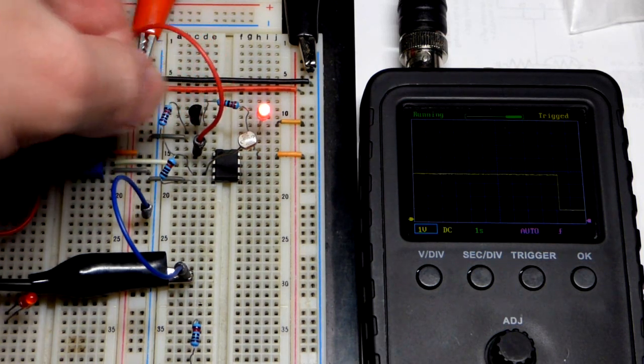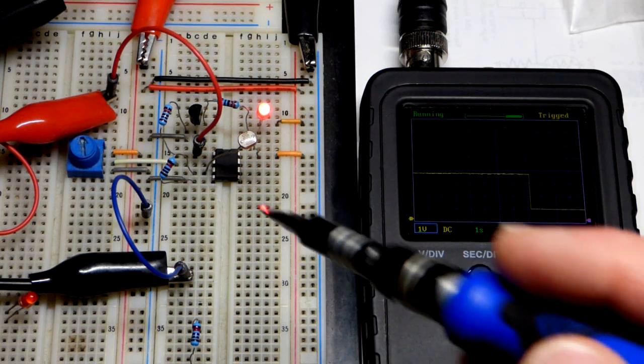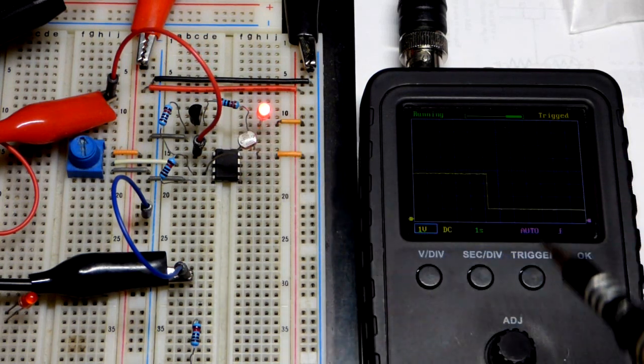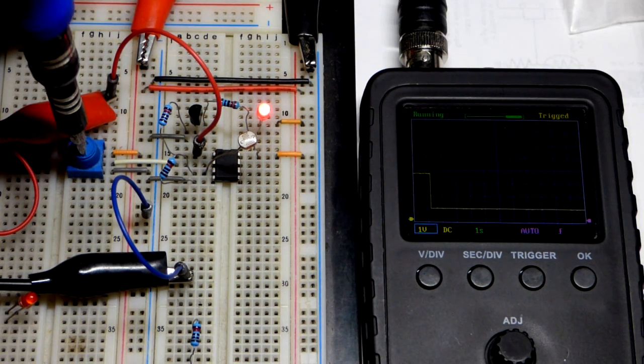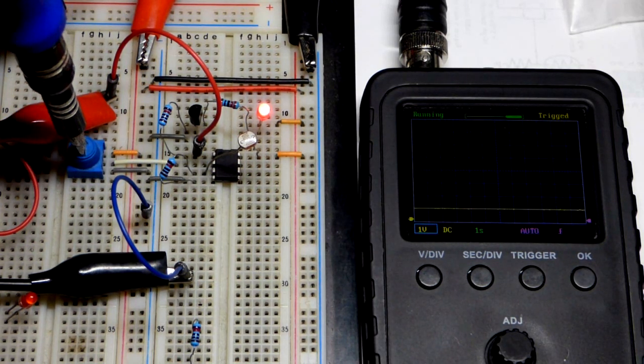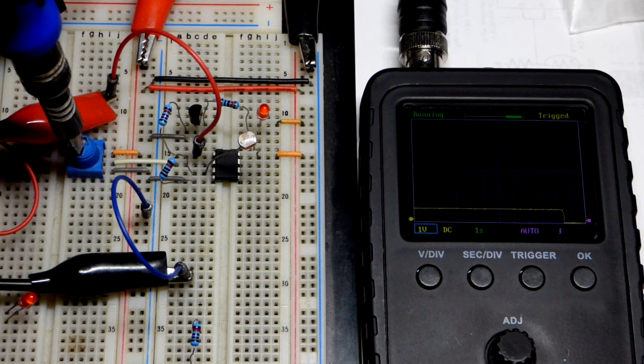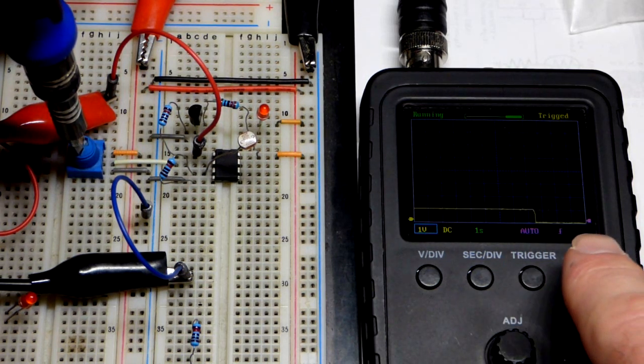So this op amp really doesn't like to provide current and maintain a voltage. So it is a single supply op amp, which means that the voltage is made to go to ground right there.